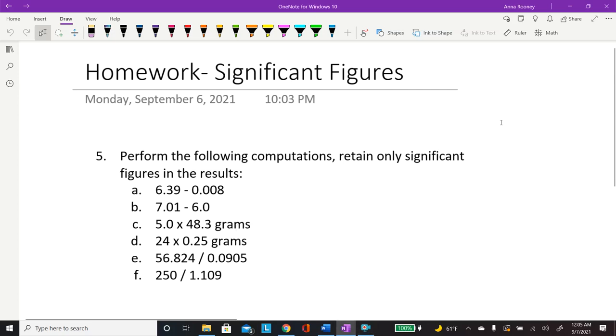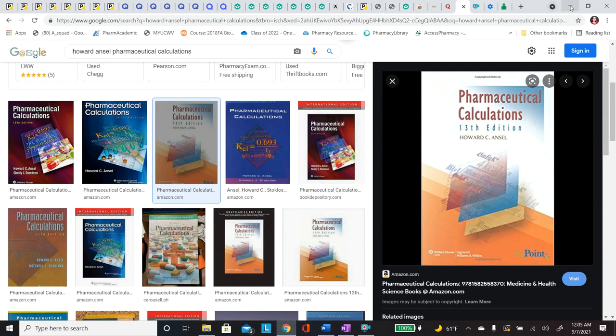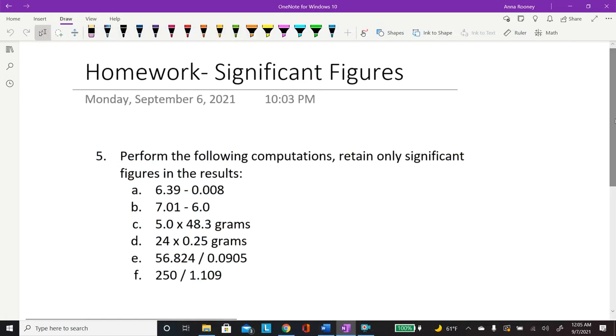Hello again! Alright, so we're doing the last problem from significant figures in Ansel's 13th edition. This is for University of Toledo's PHPR 3010. We're going to perform the following computations and retain only significant figures in the results.